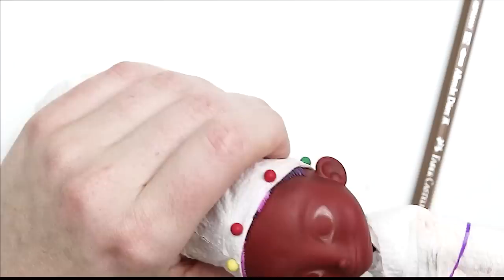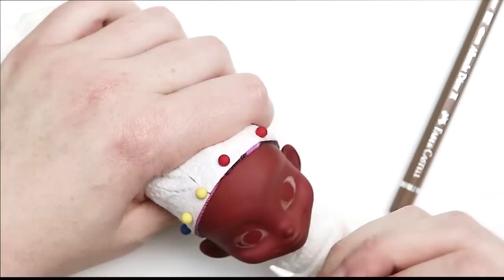Using a white watercolor pencil, I'm going to start blocking in the whites of her eyes. And this will give me a basic idea of where her irises will be.